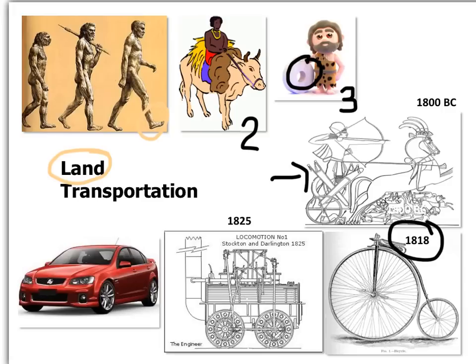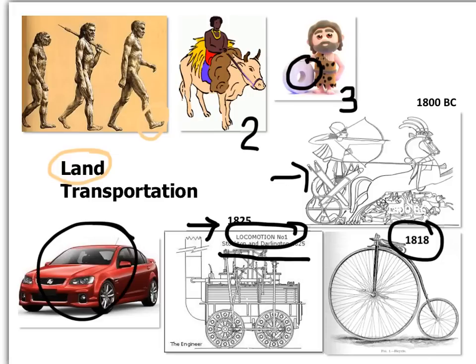We have to go up to 1818 to see the first model of the bicycle — the one you see in the picture with two wheels of different sizes. In 1825, Stockton and Darlington combined the steam engine and wheels to make the first locomotive. During the last hundred years, we have seen the car taking space in our roads, with over one billion cars around us.